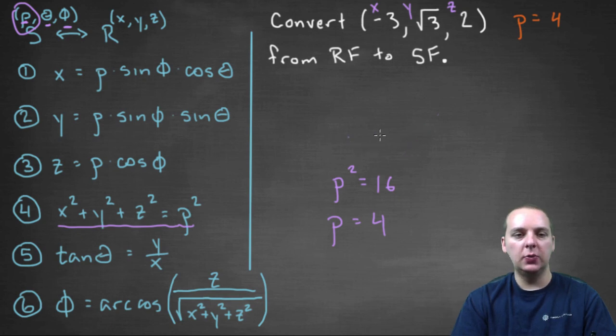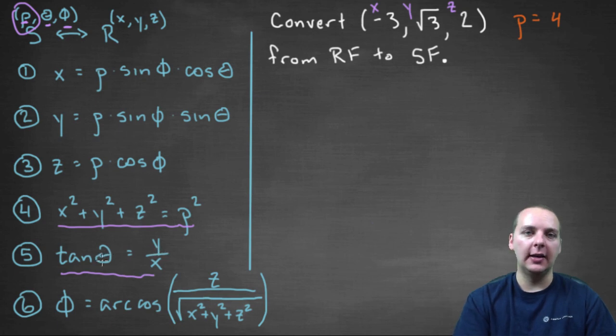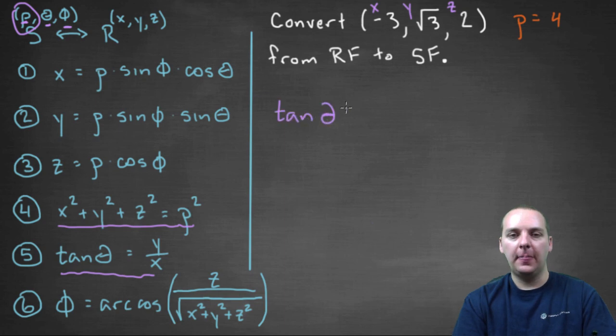Alright, look through those conversions one through six and see if you find something that will convert an x, y, and z into a theta. Looking through our list here, I think probably the best choice would be number five, because we have a theta, y, and x. We have y and x, and we can use that to find the theta. So let's do that one, so we've got tan theta equals y over x. For us that would be root three over negative three.